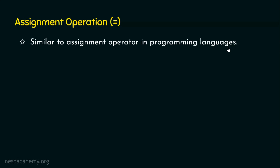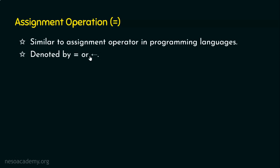In relational algebra also, the assignment operation is not an exception — it does the same kind of assignment as in programming languages. The symbol used can vary: some conventions use the equals symbol, and some use a left arrow. The left arrow denotes that the right-hand side value is assigned to the left-hand side.